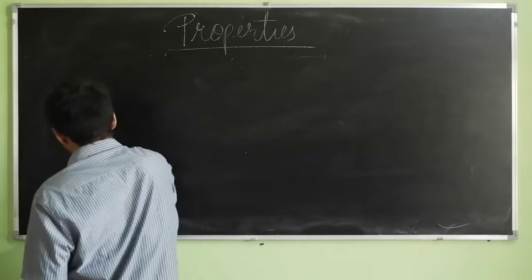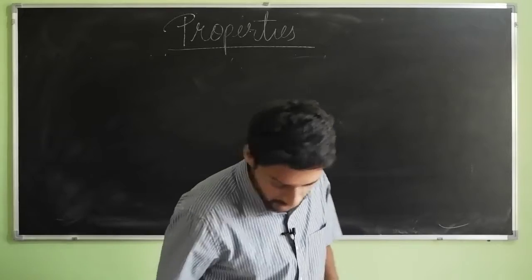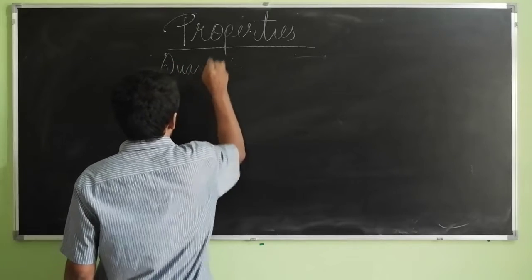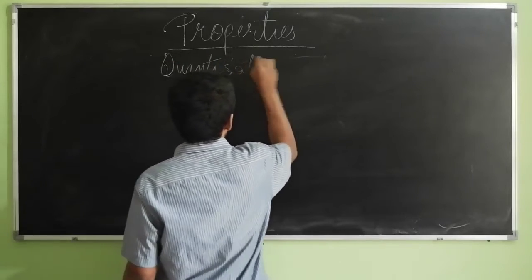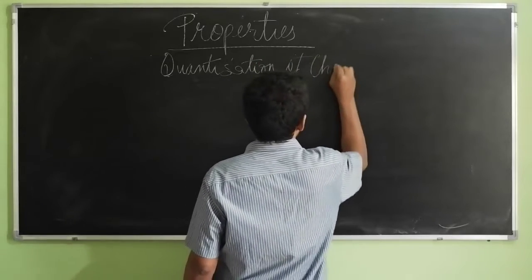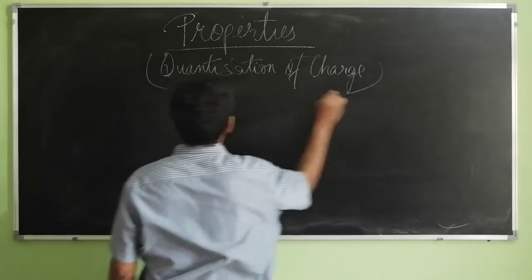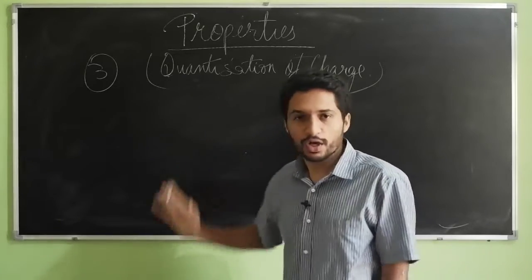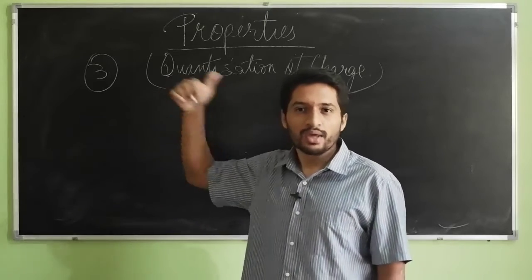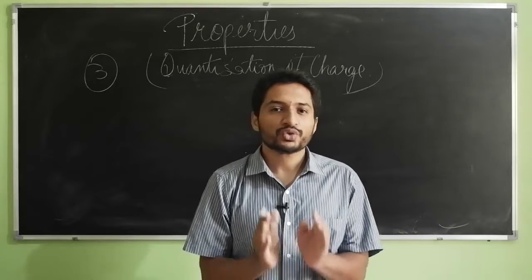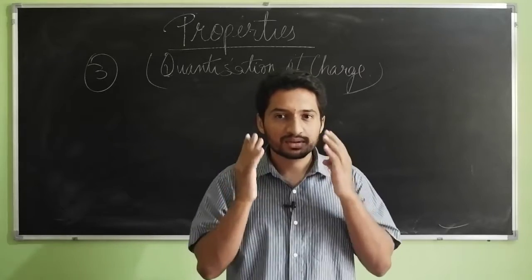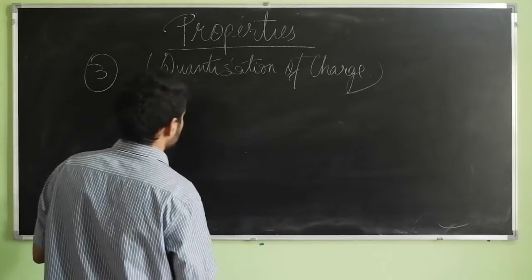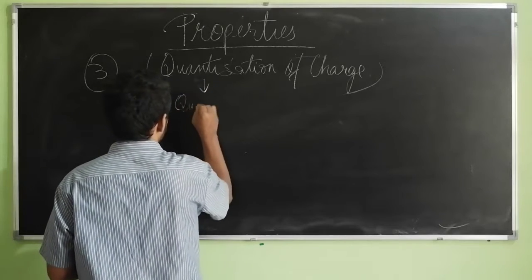Now let's move on to the third property: quantization of charge. This is the most important property. Quantization means the process of existing in quanta — discrete values. When something is quantized, it can't exist in any random value; it has to exist in some discrete value.